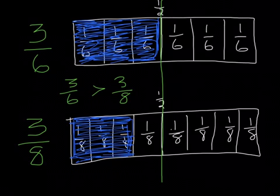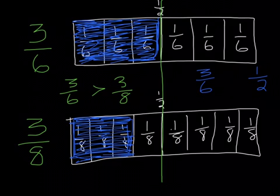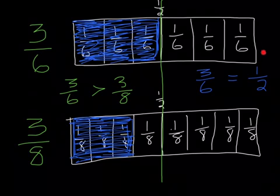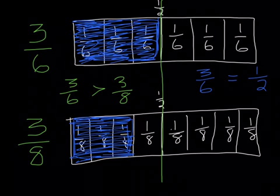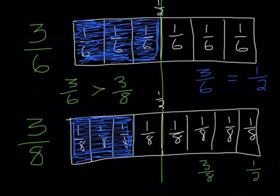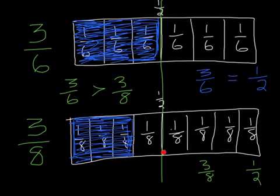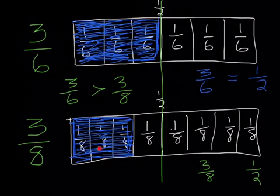What if I asked you to compare 3 sixths to 1 half? Without drawing a picture, can you determine if it's less than, greater than, or equal to? I hope you said that it was equal to. We can use our picture up here — our fraction strip — to help us. We found the benchmark of 1 half, and 3 sixths ended up on 1 half. We also know that this is equal because 3 is half of 6. So if 3 is half of 6, it's going to equal 1 half. And to that same effect, if I asked you to compare 3 eighths and 1 half — they're not equal, because half of eighths would be 4 eighths, and 3 is not half of 8. So 3 eighths is less than 1 half.